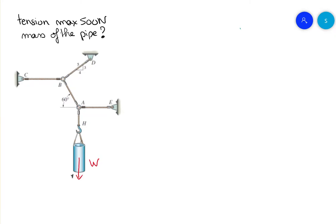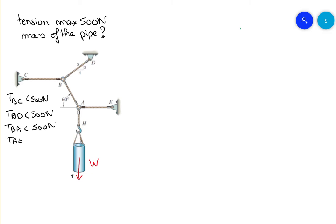So in this example, we don't know the weight or the mass of the pipe, but we know that the tension in the rope cannot be more than 500 N. That means TBC, TBD, TBA, TAE, and TAH must all be less than 500 N.